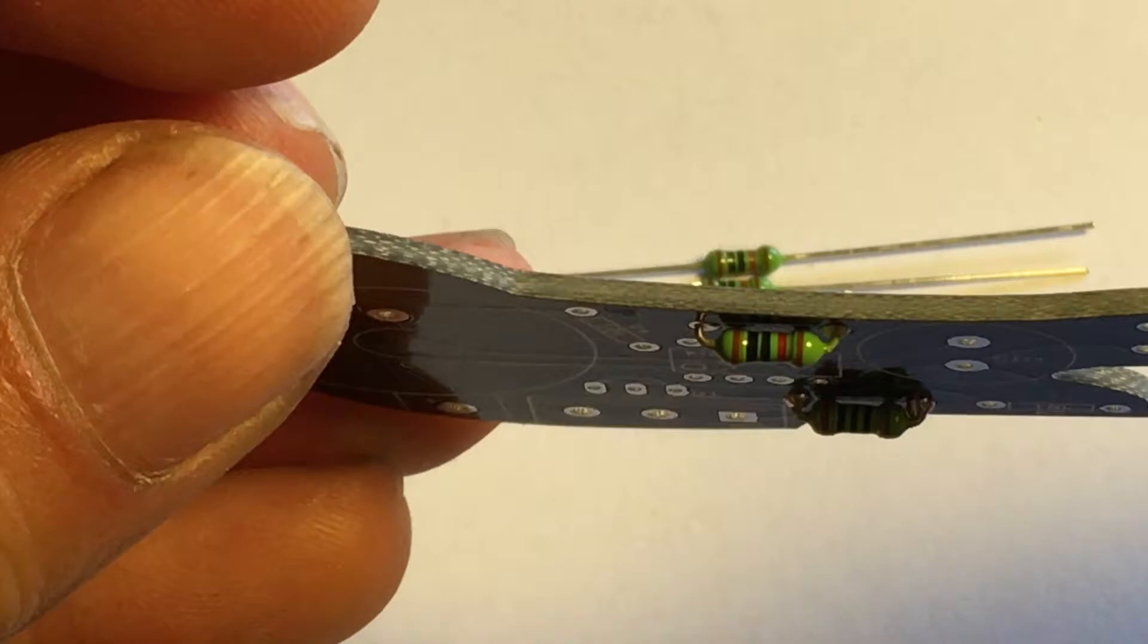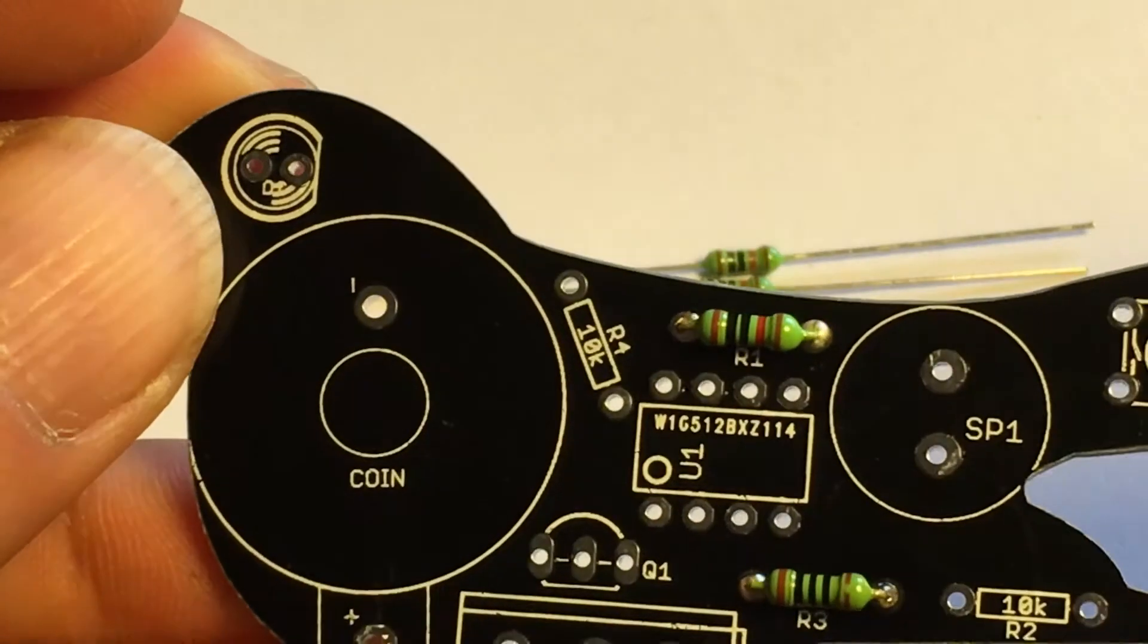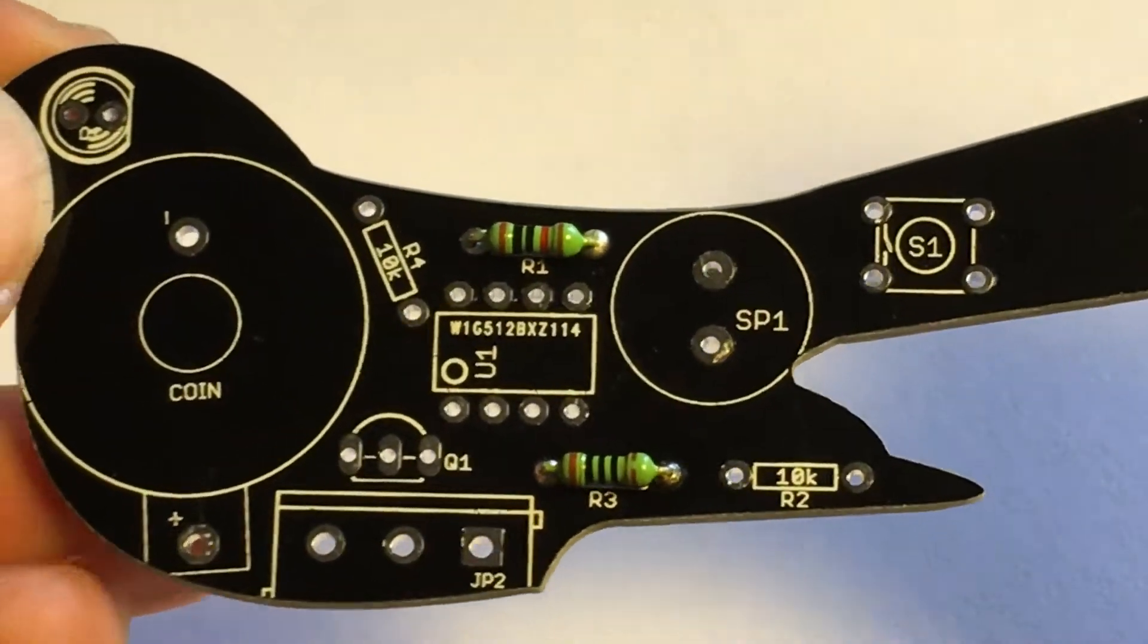So that's how you solder a resistor. I'll fast forward through the others.